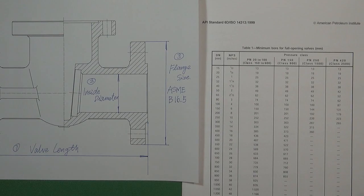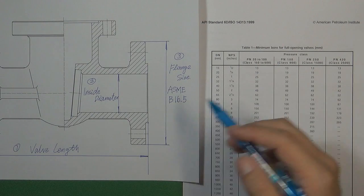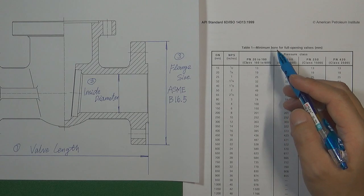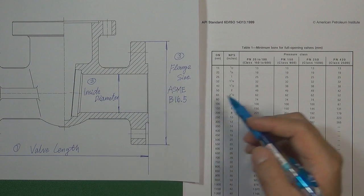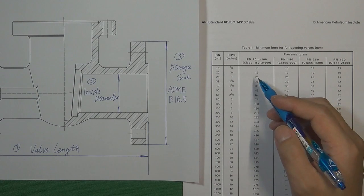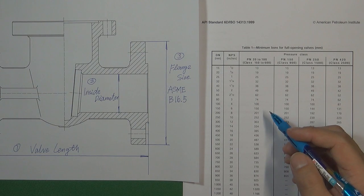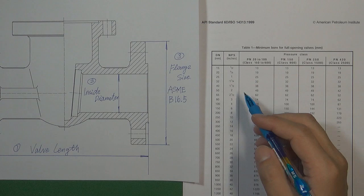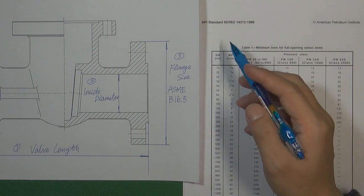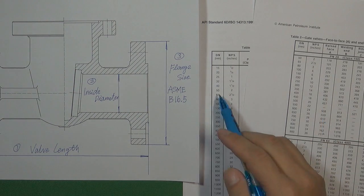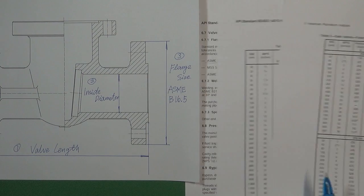For the inside diameter, API-60 also offers one table for you to design the valve inside diameter. The table is called 'Minimum Bore for Full-Open Valves.' You must follow this table to design the valve inside diameter. It is also divided into different valve sizes and different pressure classes, making it easy to find the correct design factor. So that is the difference between API-60 and API-600 when designing the three basic valve sizes: API-60 offers two internal tables for inside diameter and valve length, while API-600 refers you to two external standards.